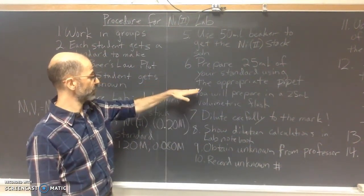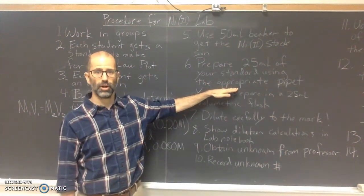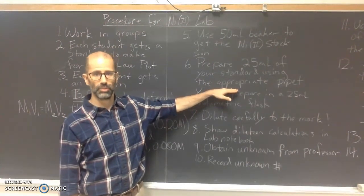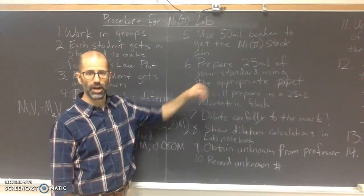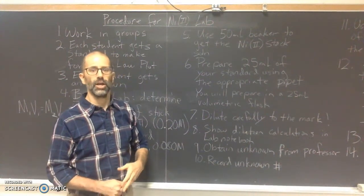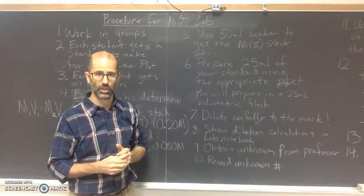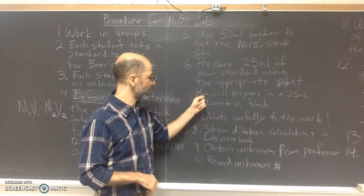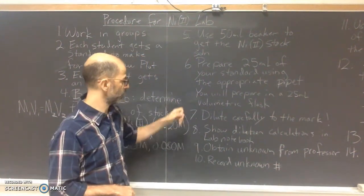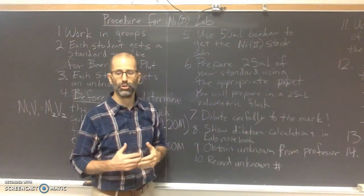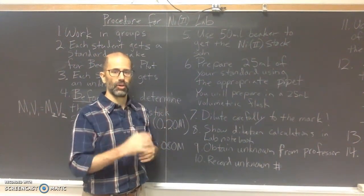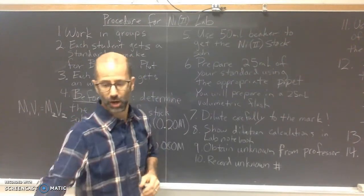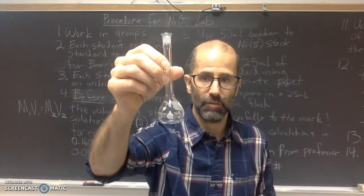You're going to prepare your 25 milliliters of each standard using the appropriate pipette. If your volume is 5 milliliters, use a 5 milliliter pipette; if it's 15 milliliters, use a 15 milliliter pipette; if it's 20 milliliters, use a 20 milliliter pipette, and so on. You already calculated the volumes you need, so just find the right pipette. You're going to take the pipette, get an aliquot of the nickel 2 solution, and transfer it into your 25 milliliter volumetric flask.